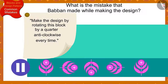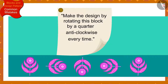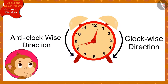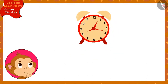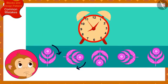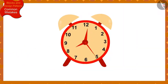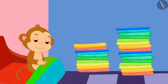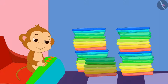If you wish to, you may stop the video and find the answer. Actually, as per the instructions written by Banno, Babban had to rotate the block by a quarter in the anti-clockwise direction every time. But Babban got confused between the clockwise and anti-clockwise directions and accidentally made the pattern on the saree by rotating the block by a quarter in the clockwise direction every time. Children, remember, whenever you want to know the clockwise direction, look at the direction of the movement of the needles in a clock. Banno explained Babban's mistake to him, and then Babban helped Banno create designs on a lot of sarees without making any further mistake.